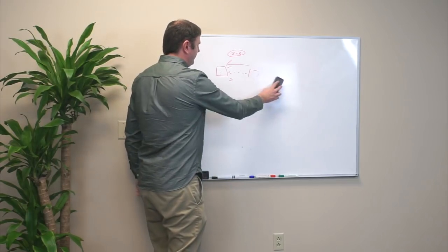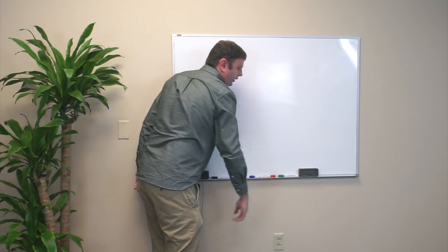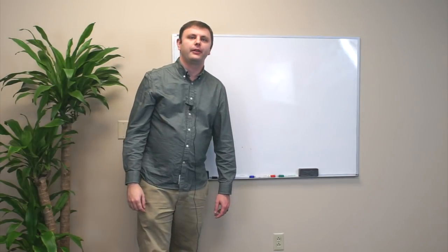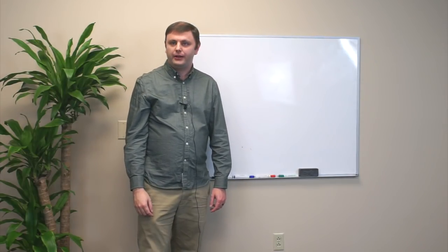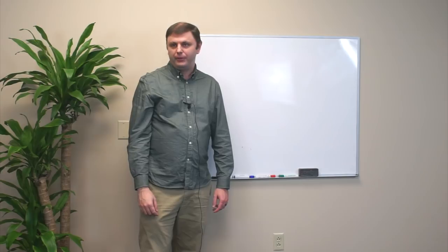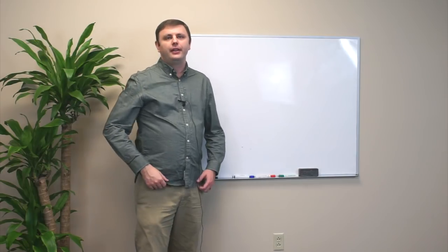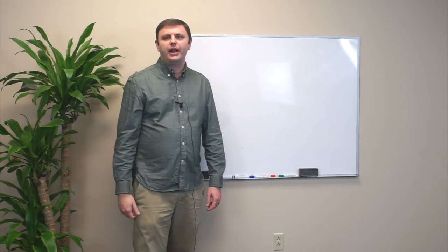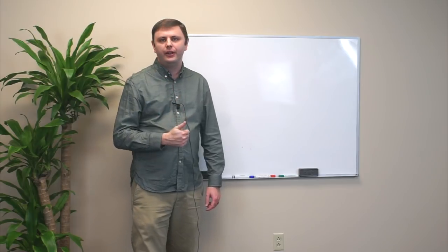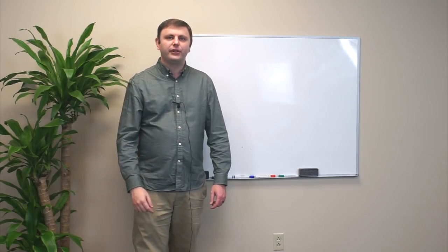So those things combined create Byzantine fault tolerant DPoS with 500 millisecond block times, irreversibility after maybe one second, and continuous operation as long as you have at least one honest node, and it requires two-thirds failure instead of one-third failure.